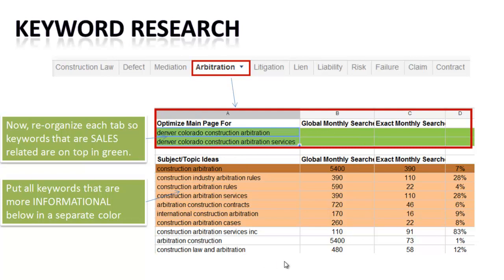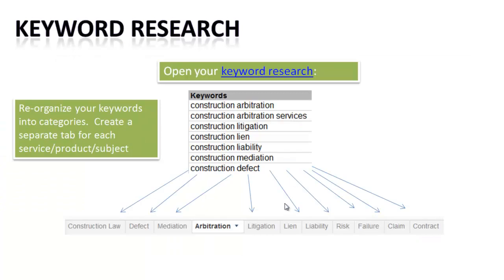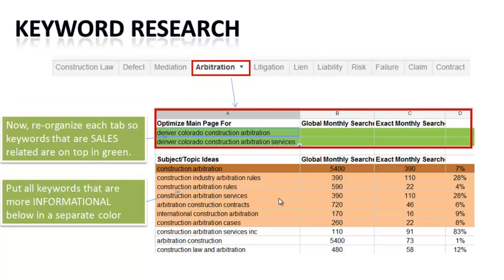If you haven't done that step and your keyword research does not look like this, go back and watch that tutorial. You can go from our website and the written tutorial, and you'll find those links there on determining what sales pages to build, so you have this organized.